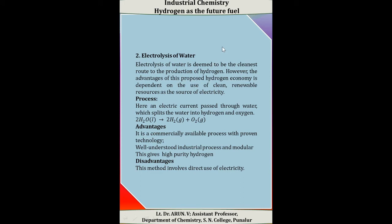The next method is the electrolysis of water, which is deemed to be the cleanest route to the production of hydrogen. However, the advantage of the proposed hydrogen economy is dependent on the use of clean renewable resources as the source of electricity. Here, an electric current is passed through water that splits water into hydrogen and oxygen: 2H₂O (l) → 2H₂ (g) + O₂ (g). The advantages of this method are that it is a commercially available process with proven technology, a well-understood industrial process, and a modular process that gives high purity hydrogen. The disadvantage involves the direct use of electricity.